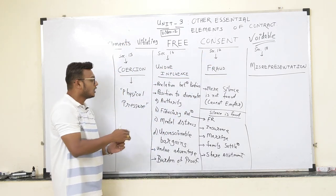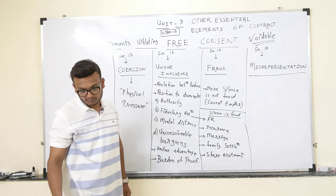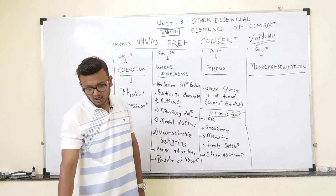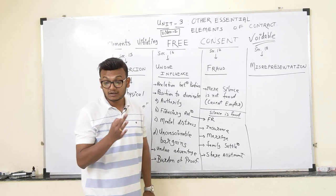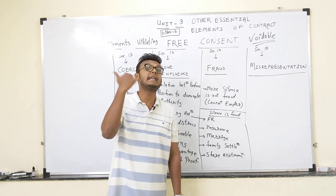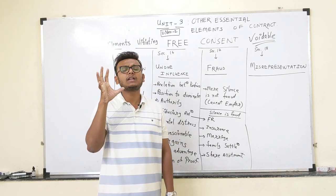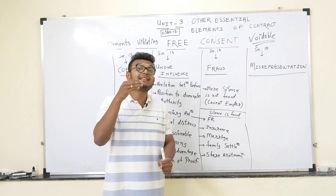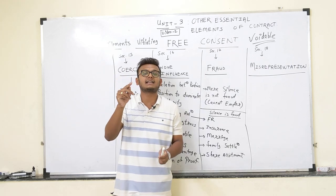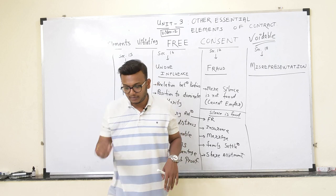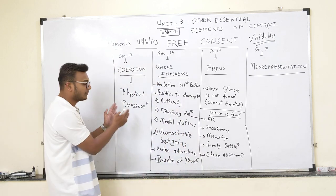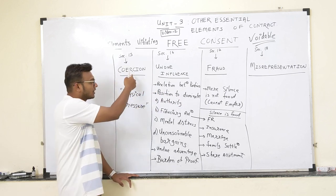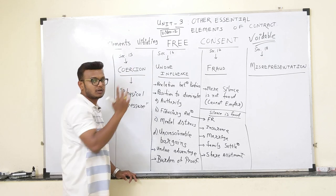Coming back to coercion — physical pressure. From page 1.41 in your module, the definition: coercion is the committing or threatening to commit any act which is forbidden by the Indian Penal Code. Basically, coercion means physical pressure is applied. For example, if someone wants money at gunpoint, that will amount to coercion — it will be a voidable contract.